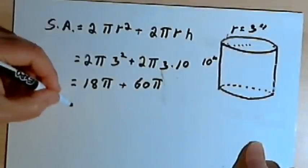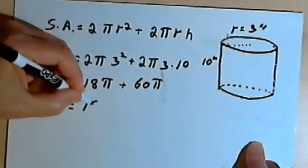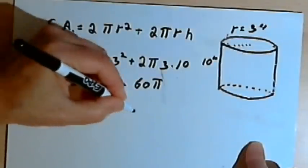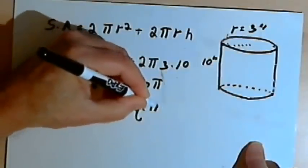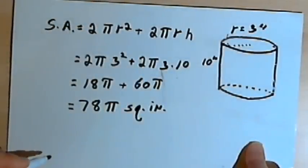I've got 18 pi plus 60 pi, so that will be 78 pi square inches.